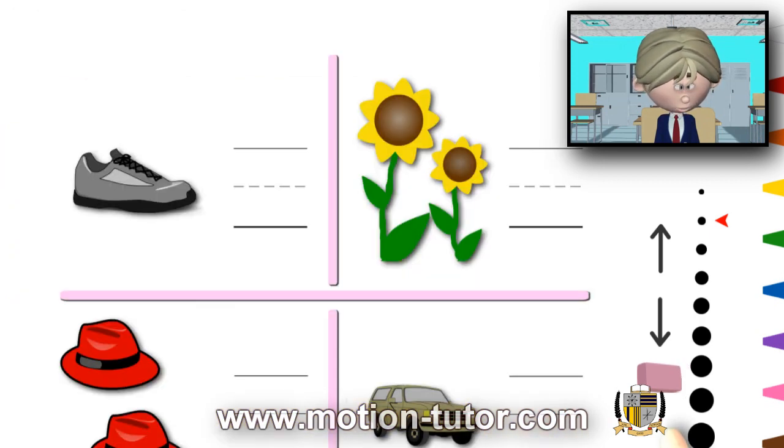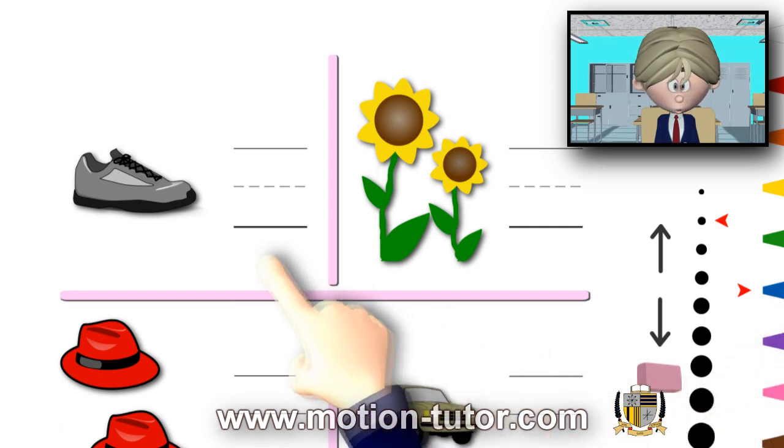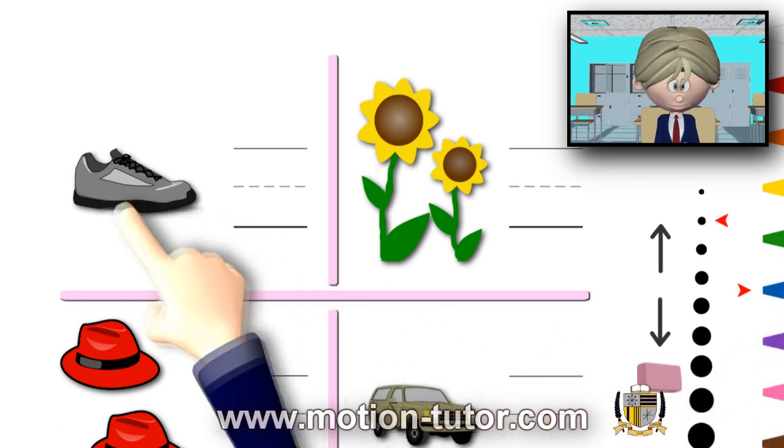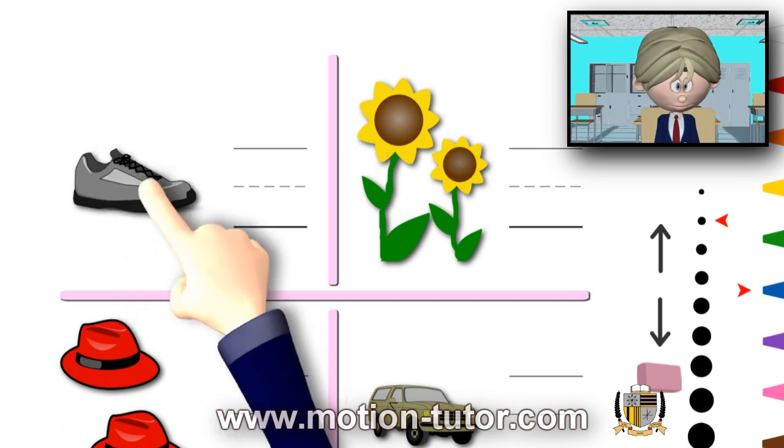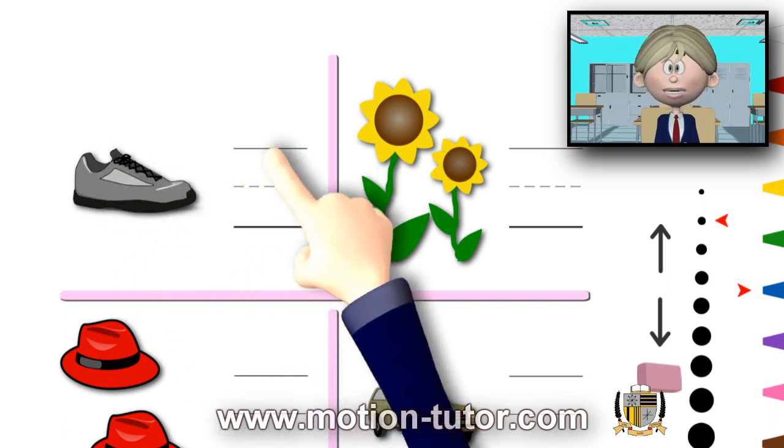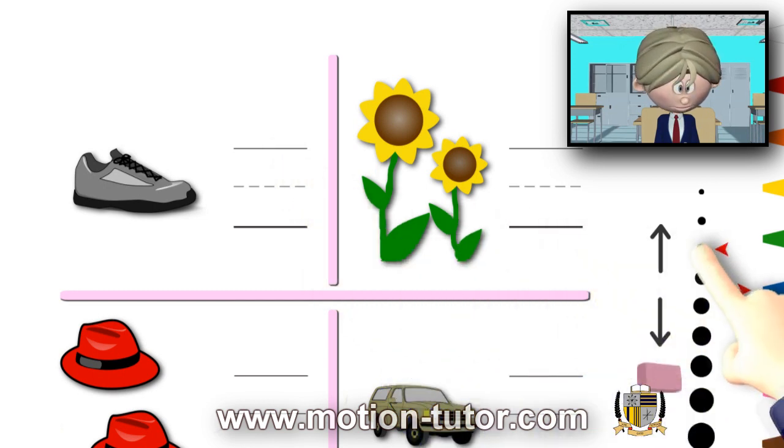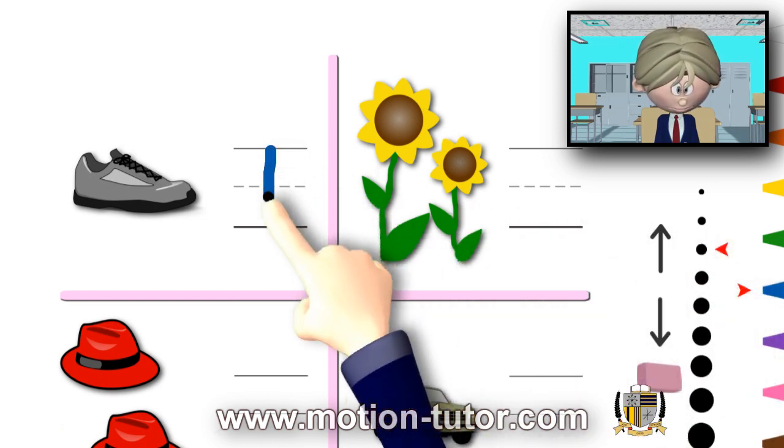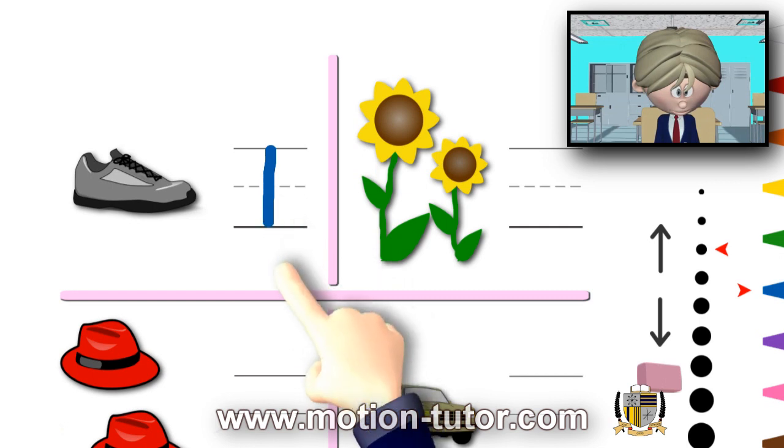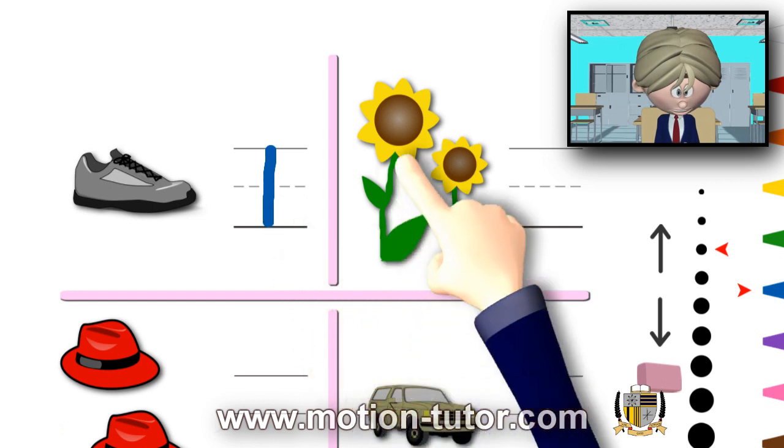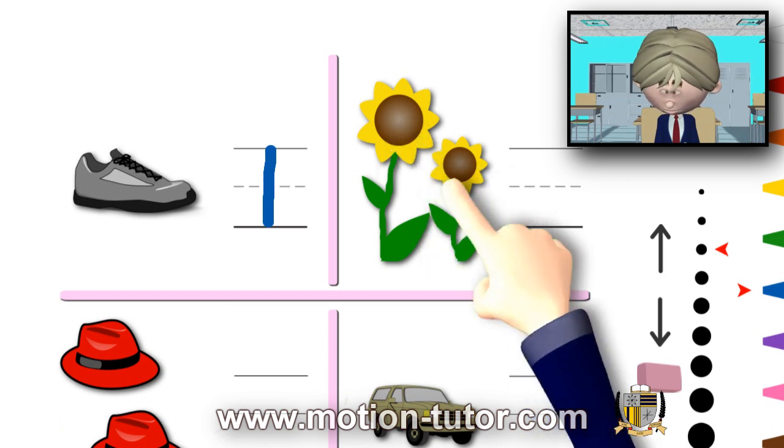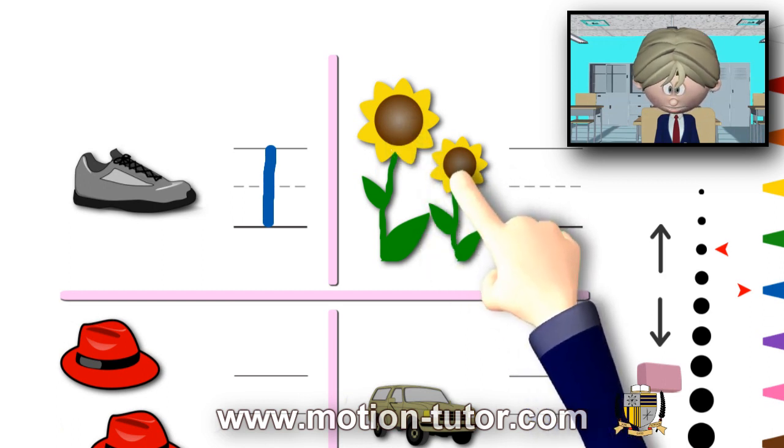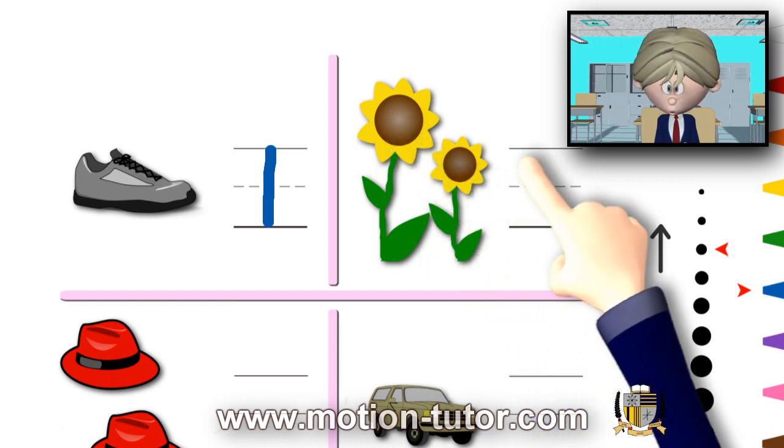Okay. Now, we're going to count the objects and then write the number beside the object. So, we have 1 shoe. So, we're going to write the number 1. Okay. We have 1, 2 sunflowers. So, we'll write the number 2.